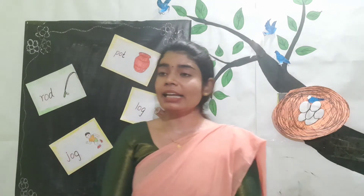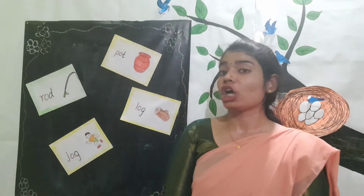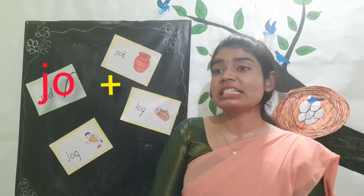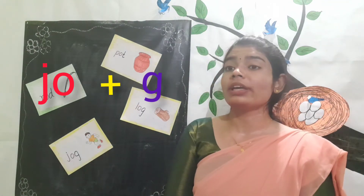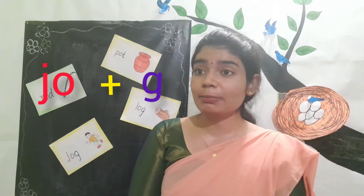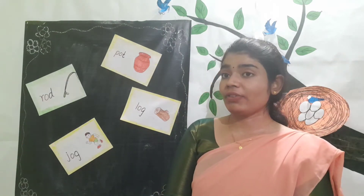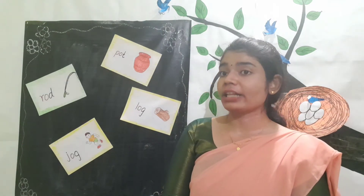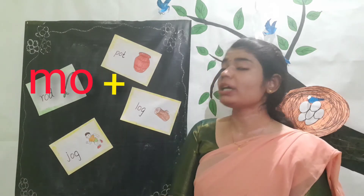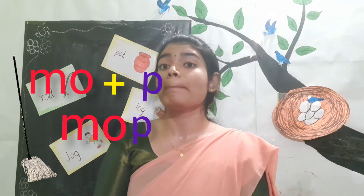Children, now I am going to make a sensible word by adding one more letter with these blends. Let's add JO with G sound — we get the sensible word JOG. When we add MO with P sound, we get the word MOB.